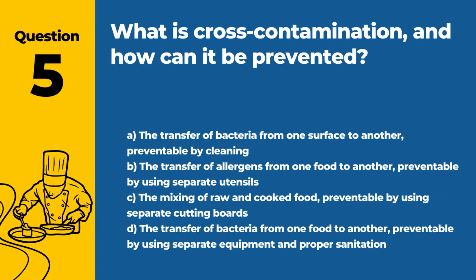Question 5. What is cross-contamination and how can it be prevented? a. The transfer of bacteria from one surface to another, preventable by cleaning. b. The transfer of allergens from one food to another, preventable by using separate utensils. c. The mixing of raw and cooked food, preventable by using separate cutting boards. d. The transfer of bacteria from one food to another, preventable by using separate equipment and proper sanitation. Answer d. Cross-contamination is the transfer of harmful bacteria from one food or surface to another and is preventable with proper sanitation and separate equipment.